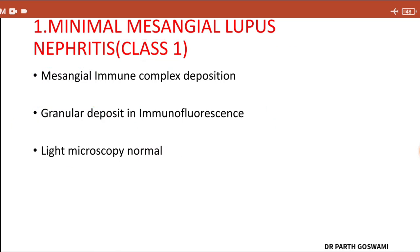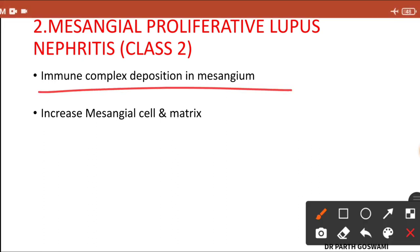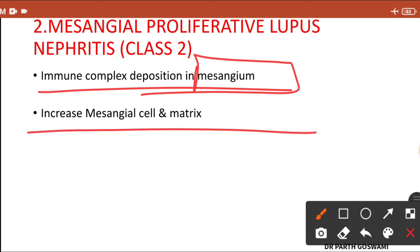Class 2 is mesangial proliferative lupus nephritis. Here also, immune complex deposition is present in the mesangium, but light microscopy shows increased mesangial cells and mesangial matrix, indicating mesangial proliferation — hence the name mesangial proliferative lupus nephritis.